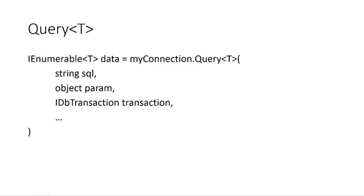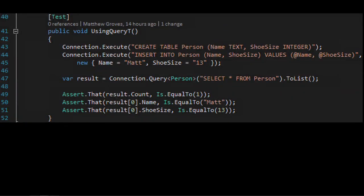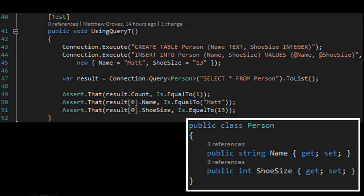If you prefer strongly-typed objects — which I generally do — use Query<T> instead. Here's pseudocode: Query<T> gives you IEnumerable<T> back, one per row, with the same optional parameters as before. Dapper tries to map those fields to the properties of the type you specify. In this example I'm saying Query<Person>, and I get a strongly-typed list back where name is 'mat' and shoe size is 13 via an actual Person class.